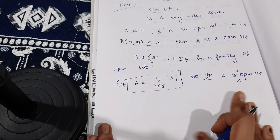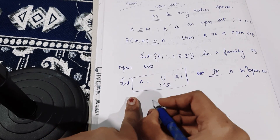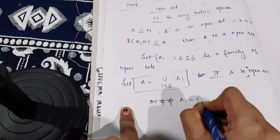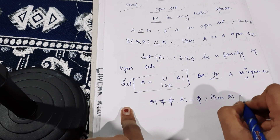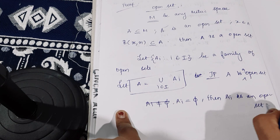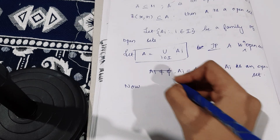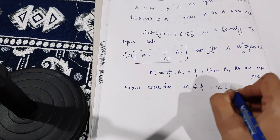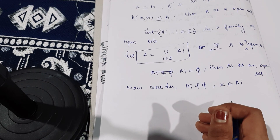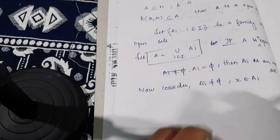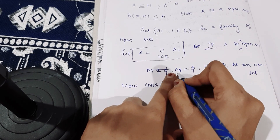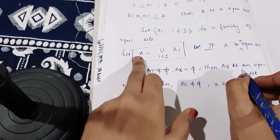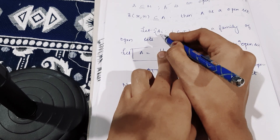For that, suppose A is a null set — that is, the union is empty — then obviously we can say A is an open set, because any null set is an open set. Now, A here is the union of the family of open sets, so we consider the case when A is non-empty.